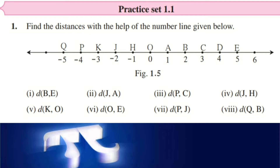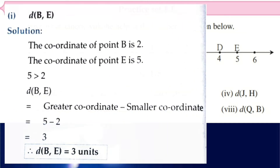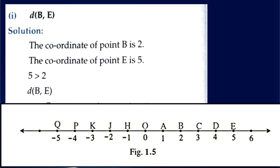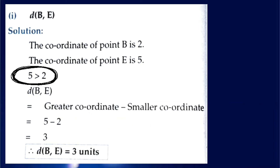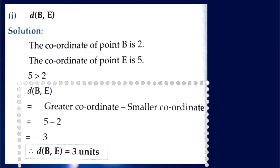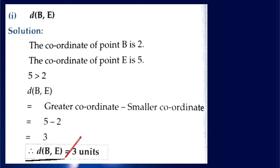First, we have to find the distance between B and E. We spot where B and E are on the number line. The coordinate of point B is 2 and the coordinate of point E is 5. Since 5 is greater than 2, the distance of B and E equals the greater coordinate minus the smaller coordinate: 5 minus 2 equals 3. So the distance between point B and E is 3 units.